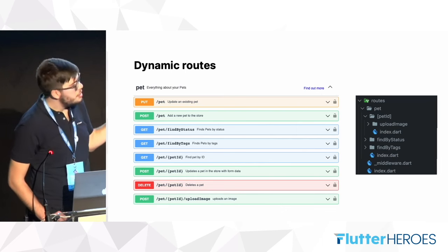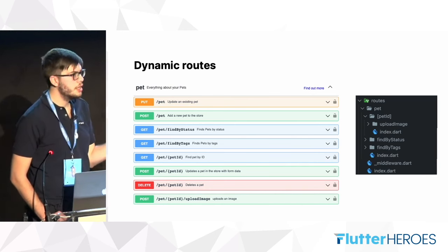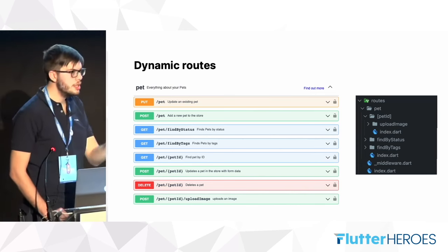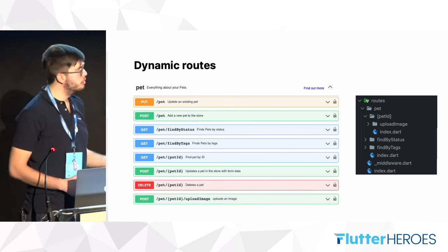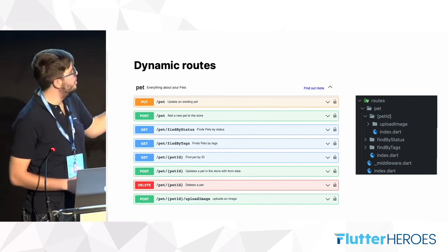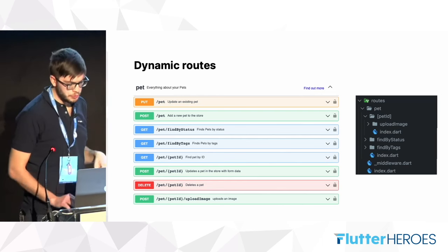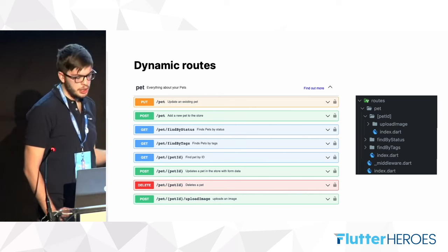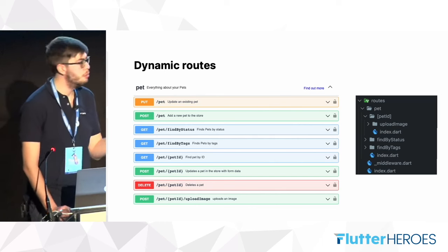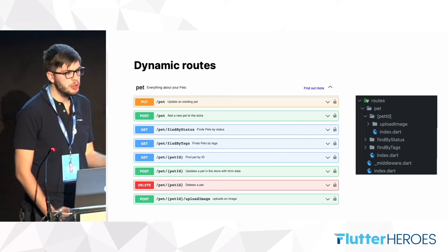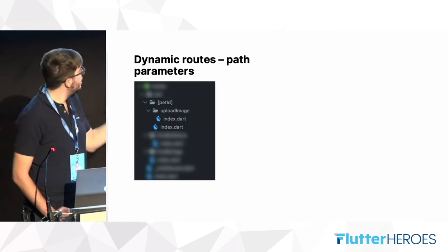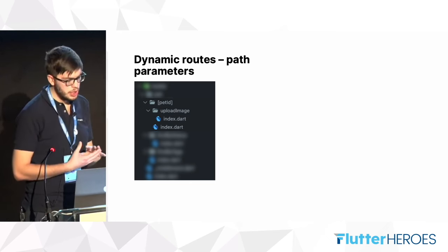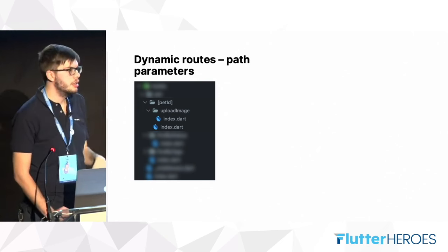You may notice that the path ID folder has its name wrapped in square brackets — that's because the path ID route is a dynamic route containing a path parameter. The handler can retrieve the path parameter easily because Dart Frog provides it directly to the handler of the dynamic route. All the subtree of a dynamic route depends on that path parameter.